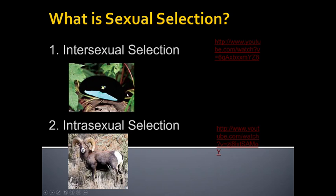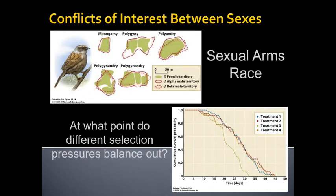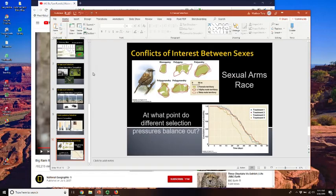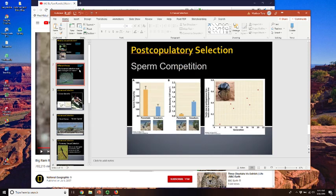Whether it's intersexual selection — where one sex is choosing the qualities of the other — or intrasexual selection — where one sex competes within their own subset for access to the other — sexual selection is nearly always strongest on the males. There are very, very few species where it's the females that show pronounced sexual selection. So the question arises: why? Why is it nearly always the males that exhibit the strong sexual selection?